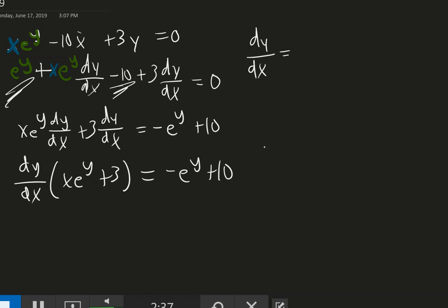Because if I have this times this, I can get rid of all of this from the left side with division. As long as I keep my equation balanced and also divide the other side. So in the end, the derivative of y, or y prime if you'd rather, was a negative e to the y plus 10, all over x times e to the y plus 3.